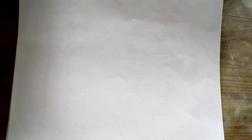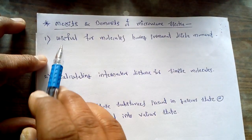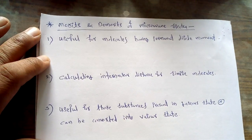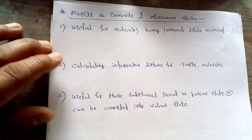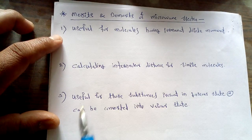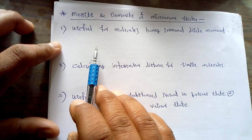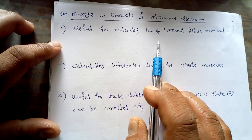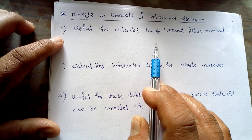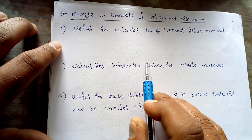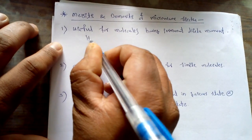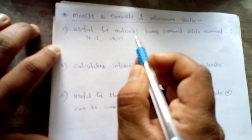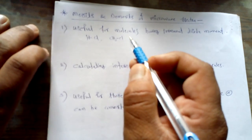After this we study the next point: the merits and demerits of microwave spectra. The first important merit of microwave spectroscopy is that it is a useful technique for molecules having a permanent dipole moment — we can study molecules like HCl and methyl chloride, which have a permanent dipole moment, using this technique.